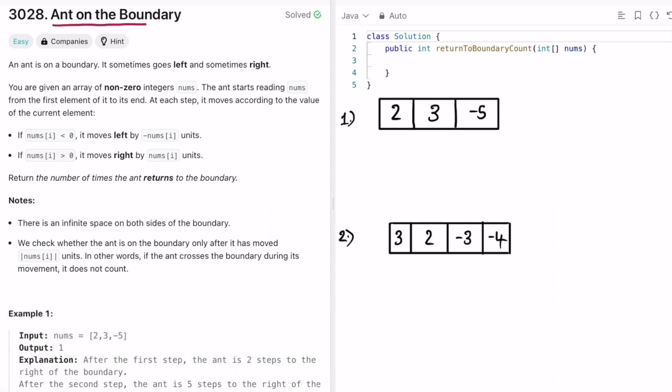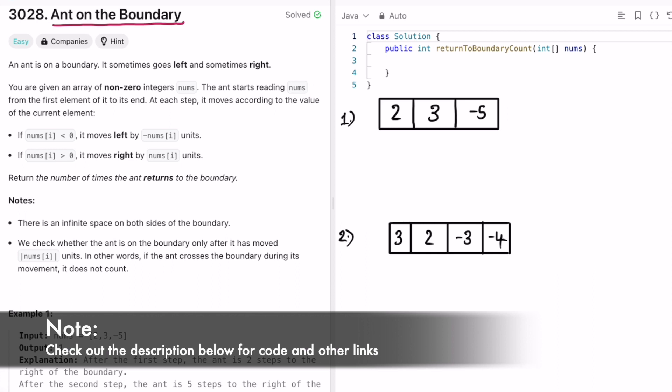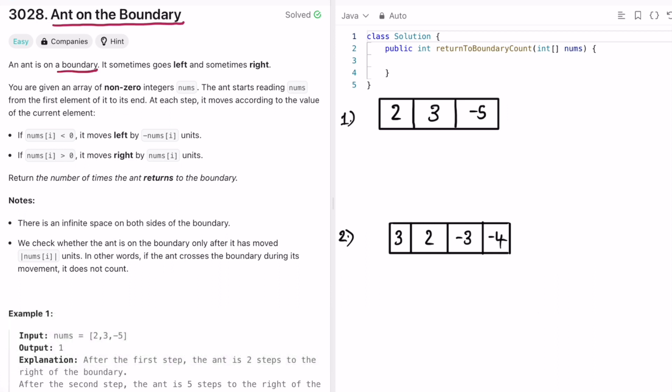we're going to look at a LeetCode problem and the problem's name is ant on the boundary. So in this question, an ant is on the boundary and sometimes it goes left and sometimes right.